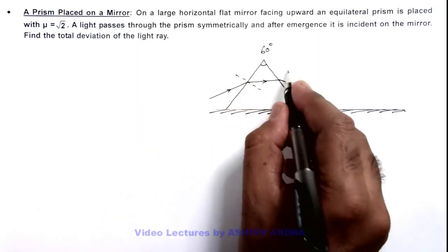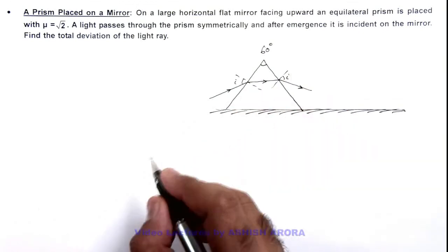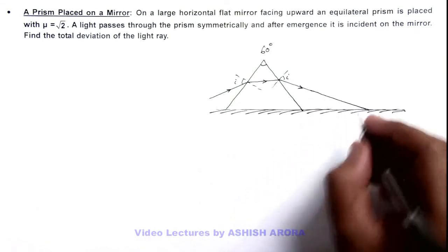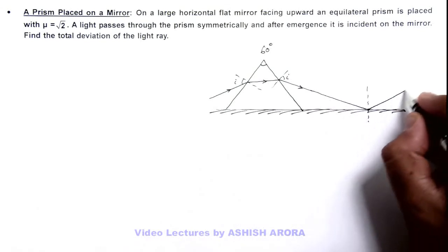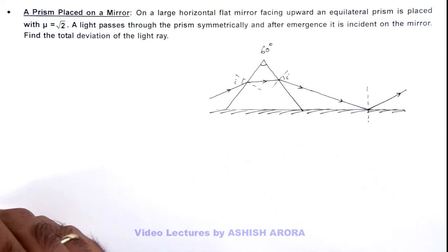So here the angle of incidence and angle of emergence are equal. On the light incidence on the plane mirror, if this is the normal the light ray will be reflected according to laws of reflection. So here we are required to find the total deviation of the ray.